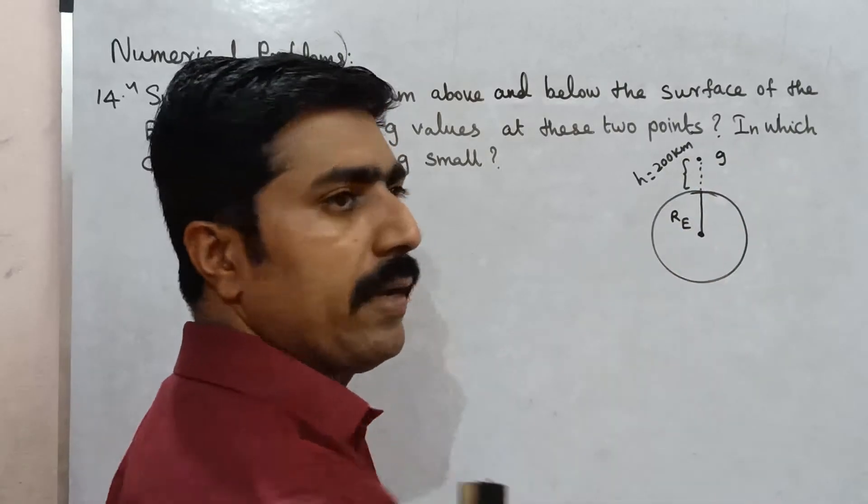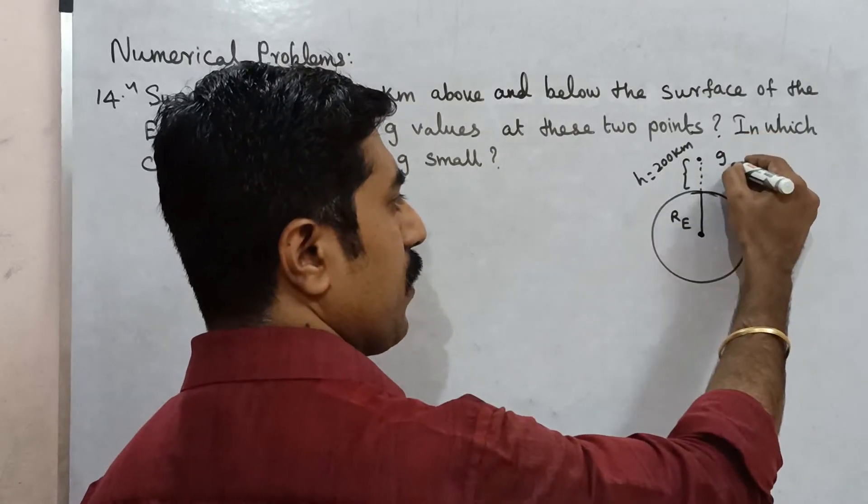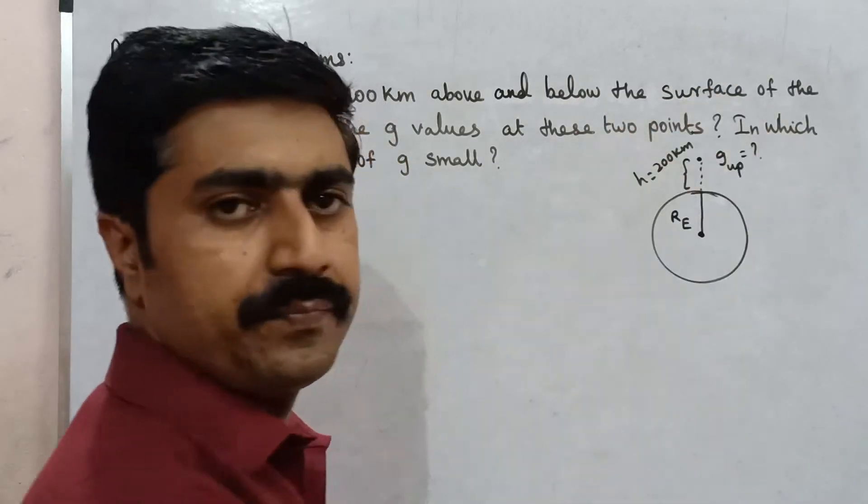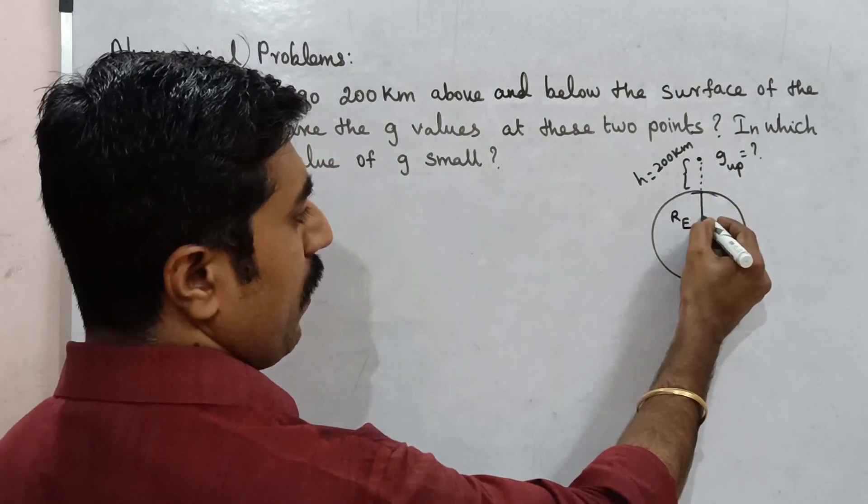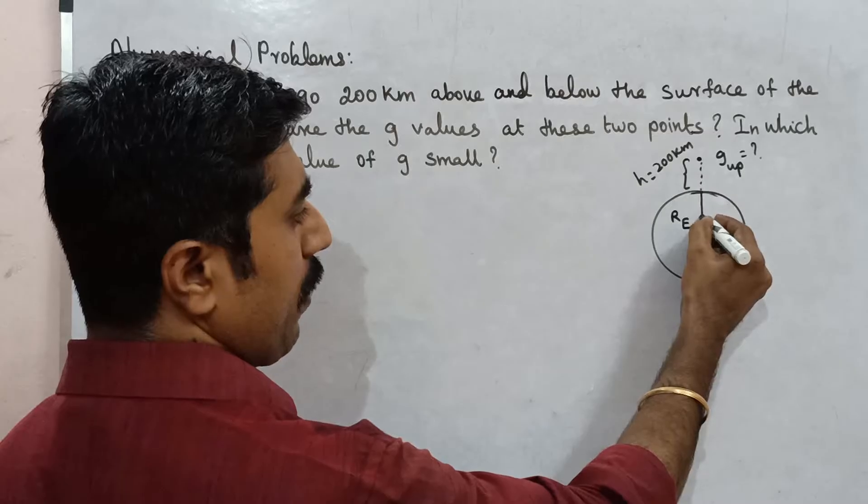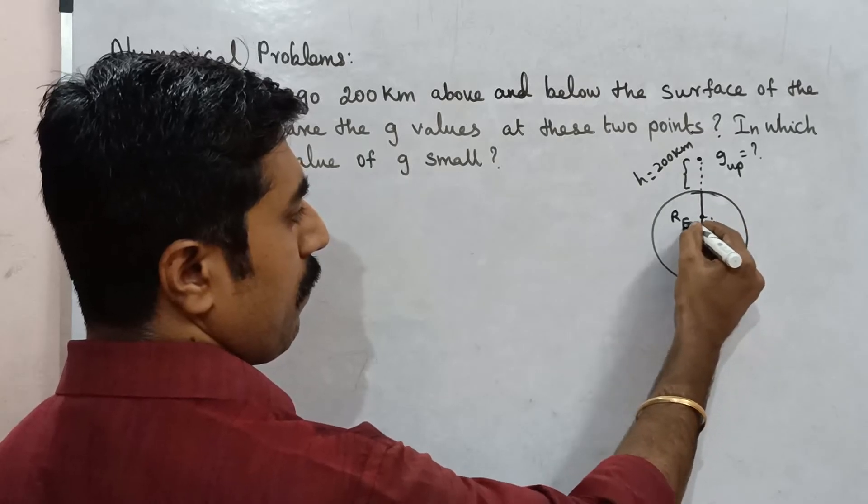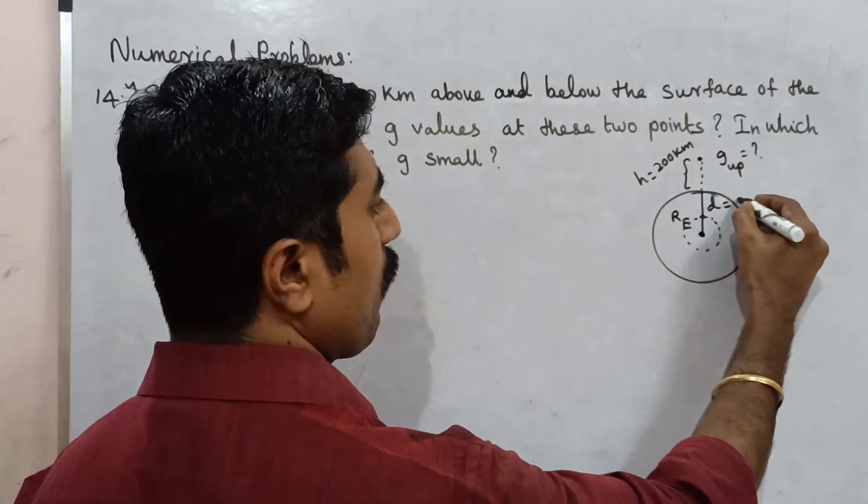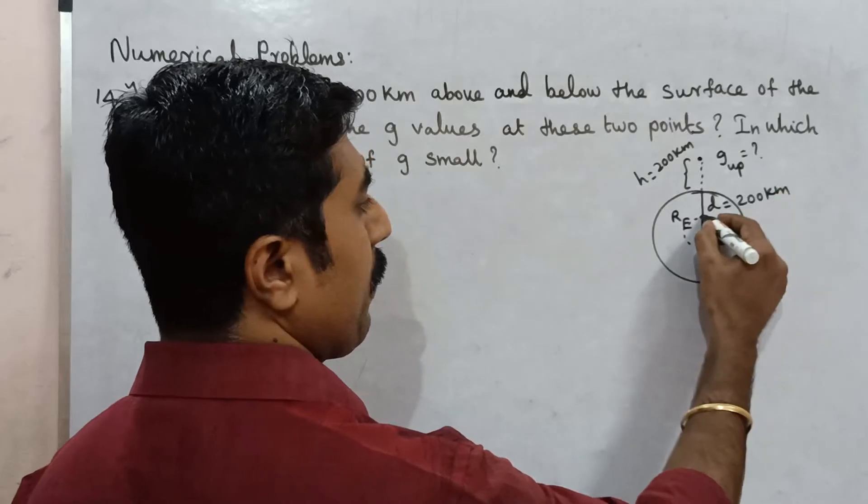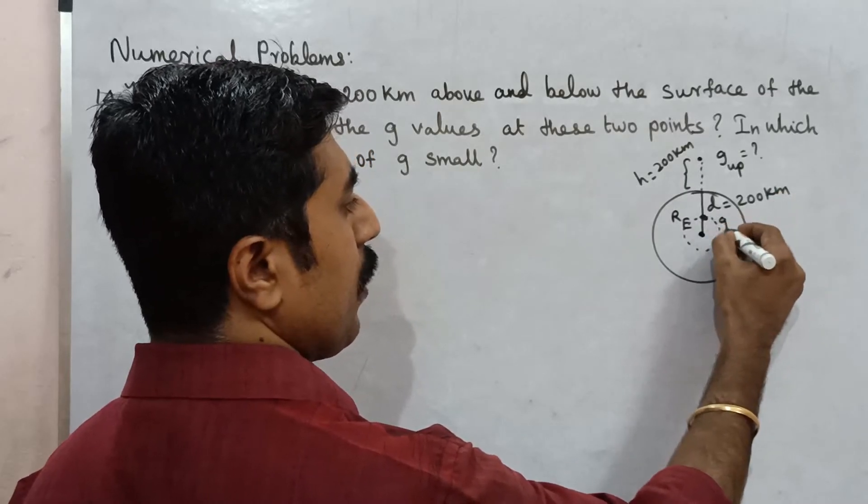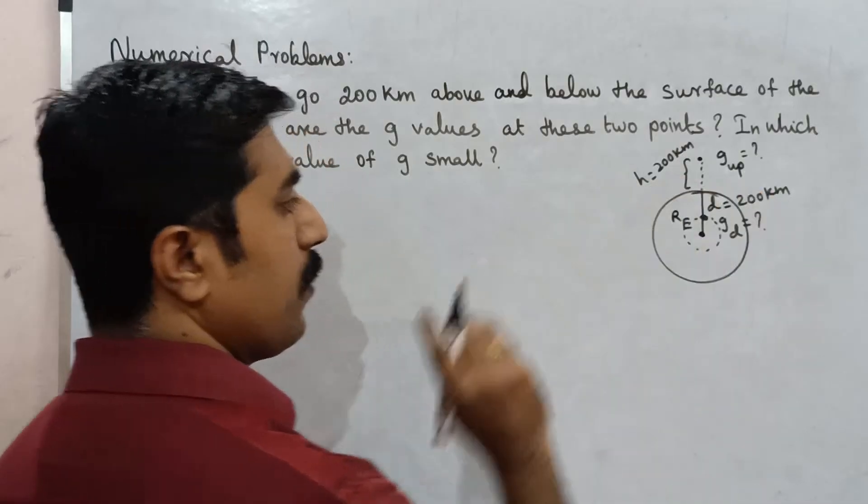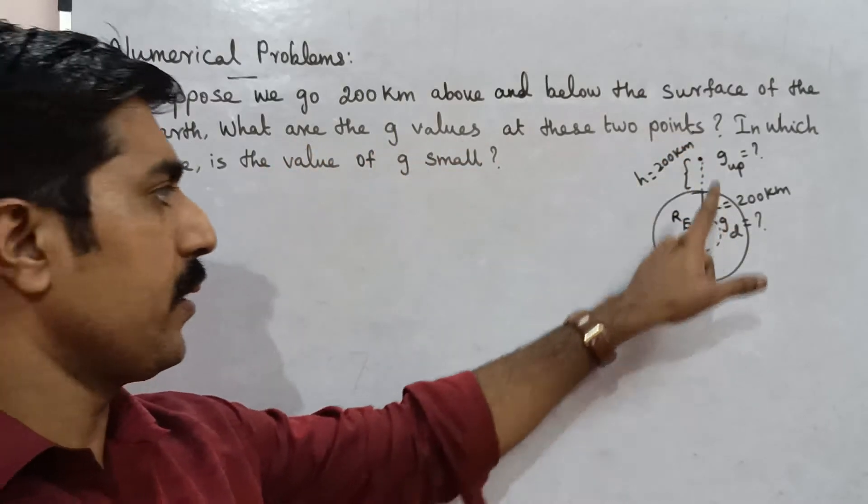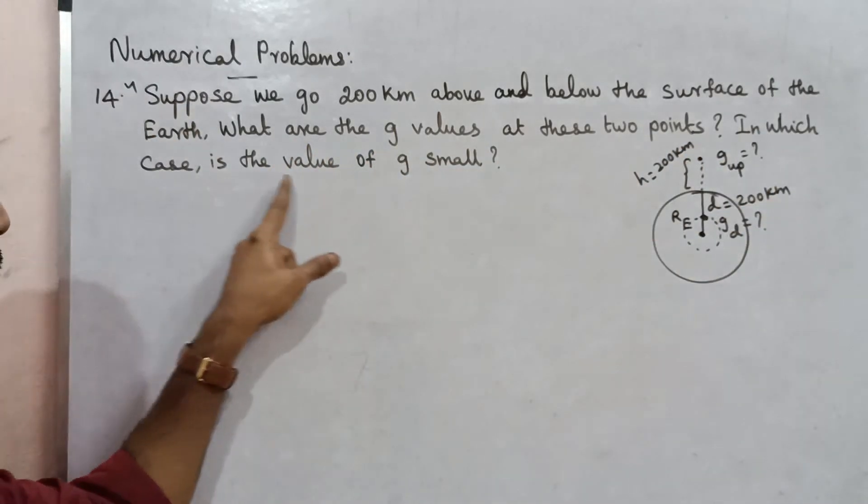Acceleration due to gravity g', that's why we can do g' upwards equal to question mark. Then the depth, the surface 200 km below. So depth 200 km. Then the g' value, this is g down, equal to question mark.